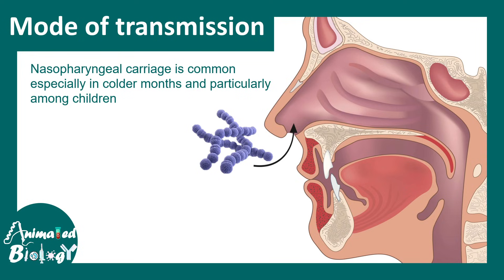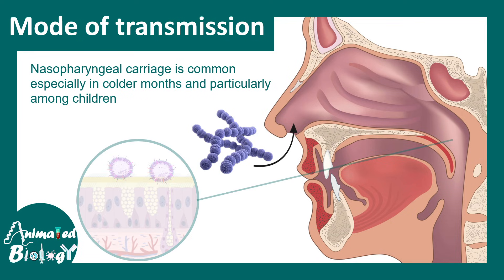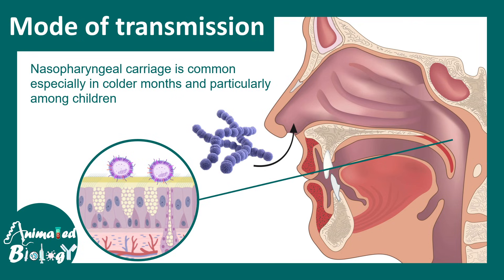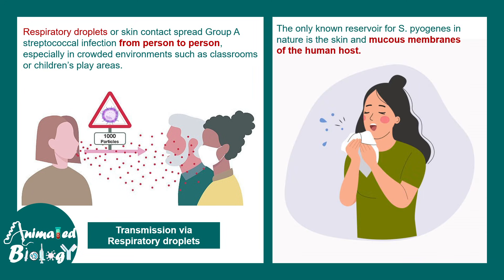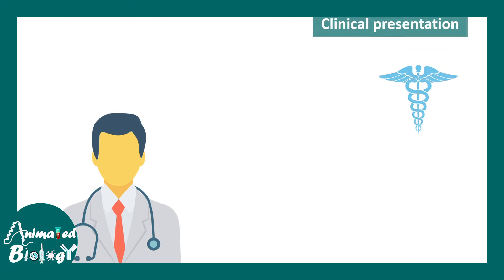Let's talk about the mode of transmission. These bacteria generally infect our body via the nasopharyngeal route, especially affecting the pharyngeal membrane — the cells under the pharynx — leading to streptococcal pharyngitis. Transmission occurs via respiratory droplets or skin contact from an infected person. These bacteria survive best in the human mucosal membrane, so in the environment they don't survive well, which is why they get transmitted from one human to another.